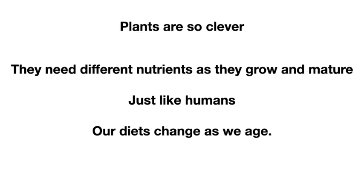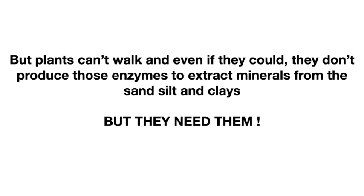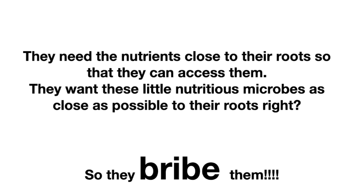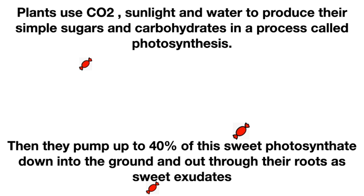So how do plants get the minerals they need? Plants are clever — they grew up with soil microbes and developed wonderful relationships. Just like you and I, plants need different nutrients as they grow, and their diets change too. But they're a little stuck in the mud — they can't walk, nor can they produce enzymes to extract minerals from sand, silt, and clays. They really need the nutrients close to their roots so that they can access them, and they want these little nutritious microbes as close as possible to their roots. So they bribe them. We know plants use CO2, sunlight, and water to produce their simple sugars and carbohydrates in a process called photosynthesis, but did you know they pump 40% of this sweet photosynthate down into the ground and out through their roots as sweet exudates?